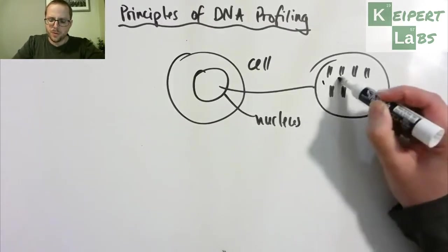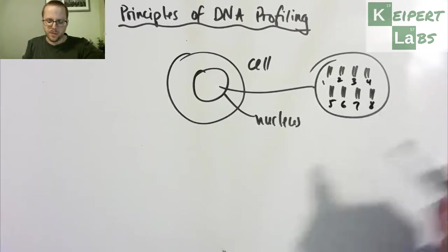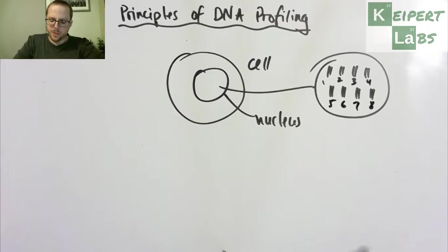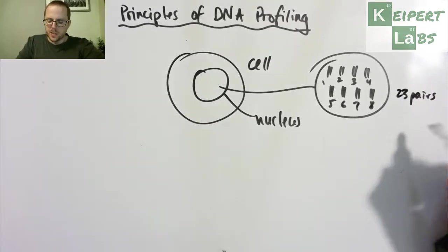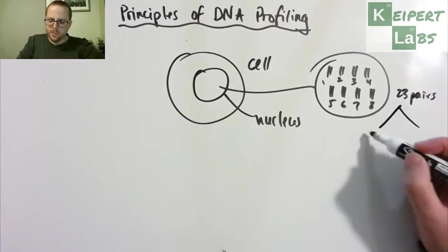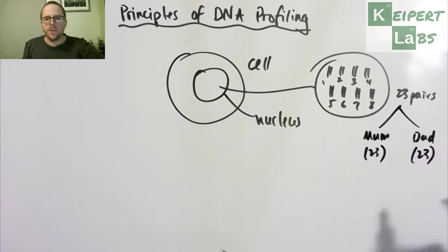So this would be chromosome 1, 2, 3, 4, 5, 6, 7, 8, so on and so on, all the way up to 23 pairs. The idea is that you've got half of that comes from mum, so 23 chromosomes, half comes from dad, 23 of the same chromosomes, different versions.